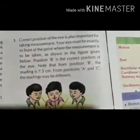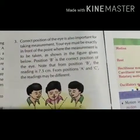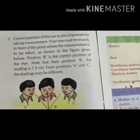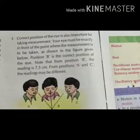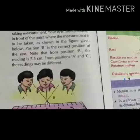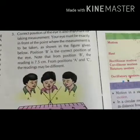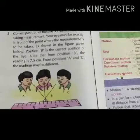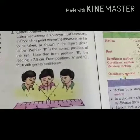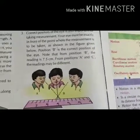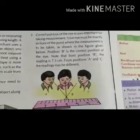The last step: correct position of the eye is also important for taking measurements. Your eye must be exactly in front of the point where the measurement is to be taken, as shown in the figure. Position B is the correct position. Note that from positions A and C the reading may be different from position B, giving an incorrect measurement.